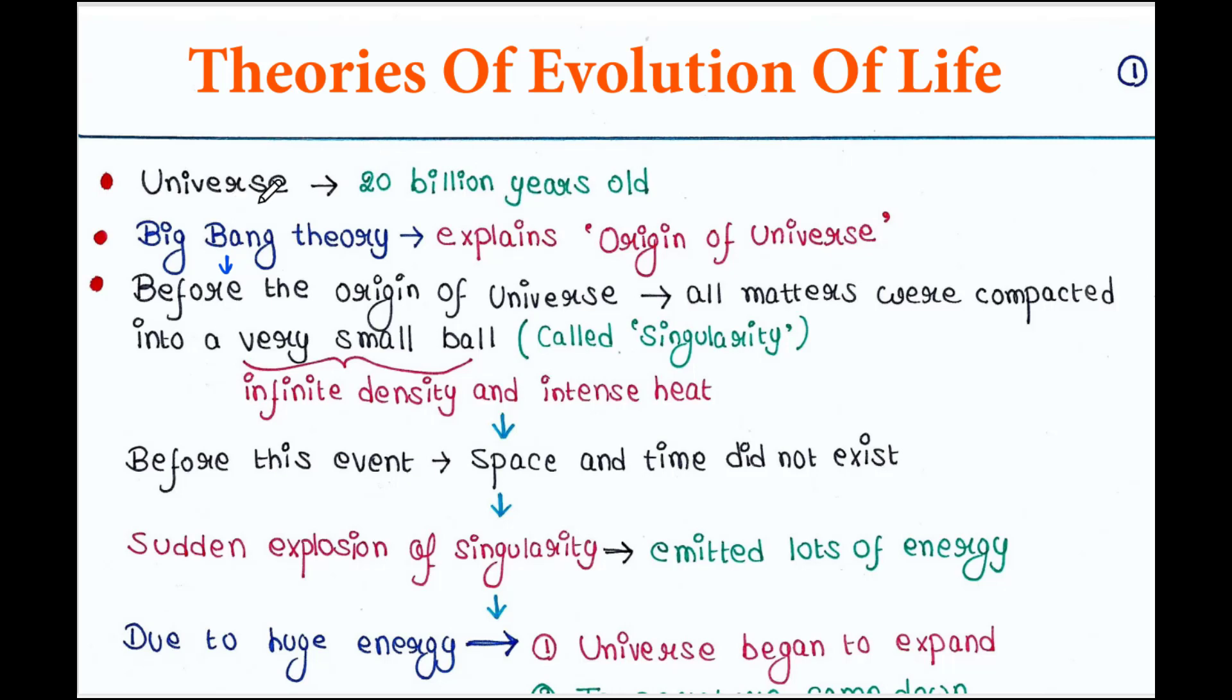So, our universe is 20 billion years old. Big Bang Theory explains the origin of universe. Big Bang Theory says that before the origin of universe, all matters were compacted into a very small ball. This ball was called a singularity. Singularity means single, right? Yes. From a single such ball, our universe was formed.